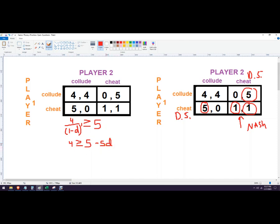Then five D equals one, so D equals one fifth, which is 0.2 or 20 percent.